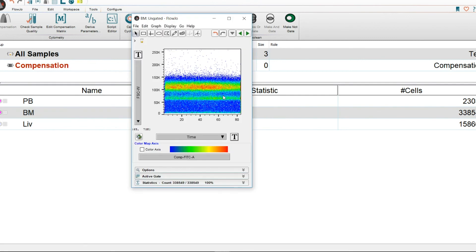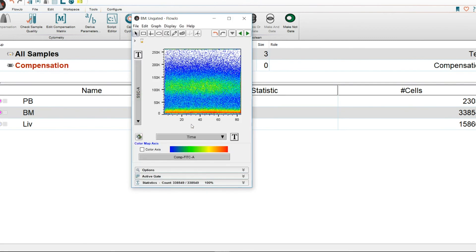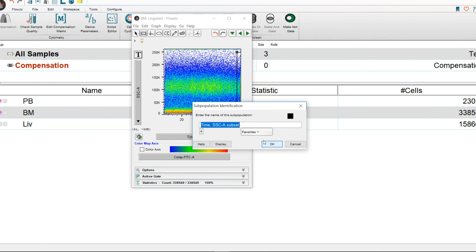So we would go back, open our window, and then let's do side scatter area, and we could see that there is a problem over here at the end. So the way we could do this is we go ahead and select it, create a gate around it. Let's call this our time gate.